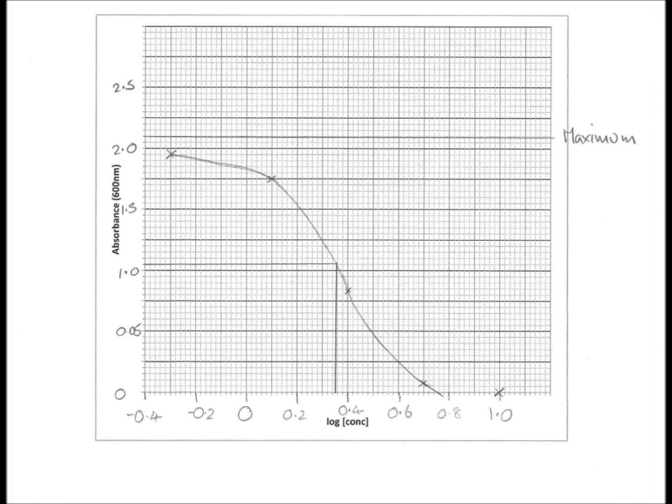You're asked to read two values off your graph: the ED50, which is a concentration which inhibits growth by 50%, and the MBC - minimum bacteriostatic concentration - which is the concentration which will completely inhibit the growth of the E. coli.